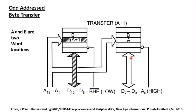To transfer a byte from an odd-addressed (high bank) location — for example, A+1 — BHE is activated (set low) to select the high bank, and A0 is set high to deactivate the lower bank. The address bits A1 to A19 supply the location of A+1 within the high bank. Being the only active bank, the high bank outputs the contents across D8 to D15, transferring the odd-addressed byte to the CPU.